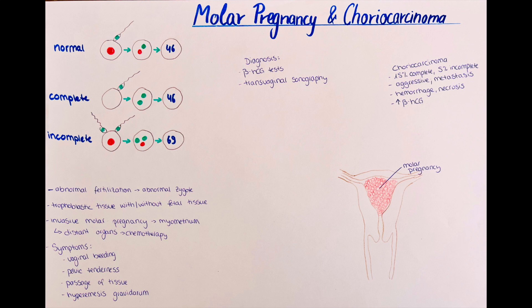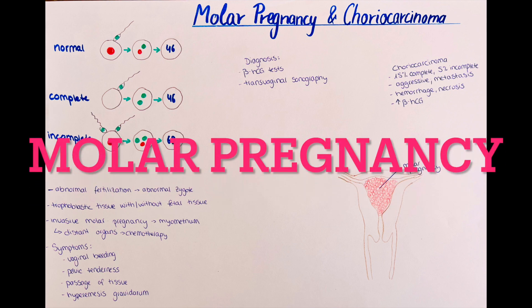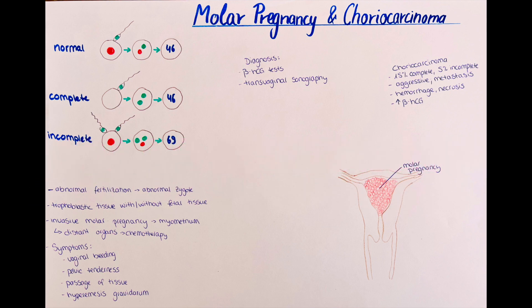Hello and welcome to this channel. My name is Victoria and today we will talk about molar pregnancy, choriocarcinoma and chorionepithidioma. A molar pregnancy is the result of a faulty fertilization of an oocyte, resulting first in the formation of an irregular zygote and then in the irregular formation of the placenta without a viable fetus. It occurs in around 1 out of 1,000 fertilizations and is characterized by the excessive proliferation of the trophoblastic cells.